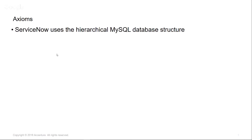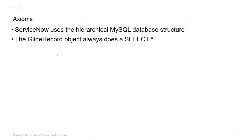There are foundational things you can hang your hat on. ServiceNow uses a hierarchical structure instead of a relational structure. GlideRecord always does a SELECT asterisk — this is not the most efficient for DBAs, but it works fine and seems to be pretty fast. It does return everything, which has serious pros but also the con of not being super efficient underneath the hood.